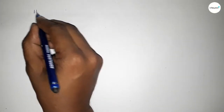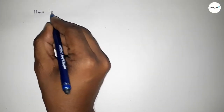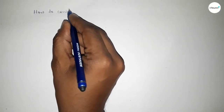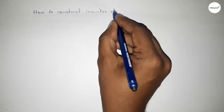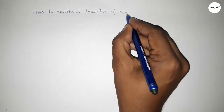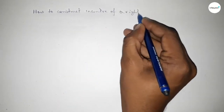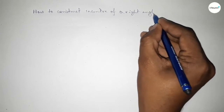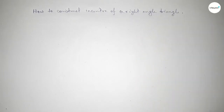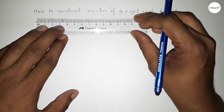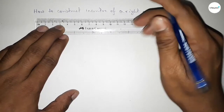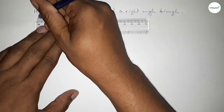Hi everyone, welcome to SI Share Classes. Today in this video we have to construct the incenter of a right angle triangle by using a compass. So let's start the video. First of all, we are drawing here two sides of a right angle triangle.